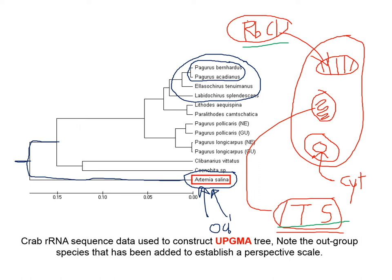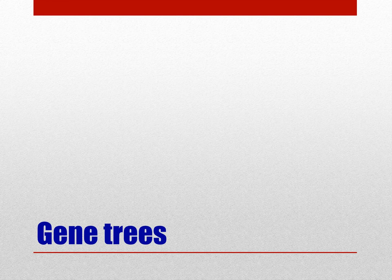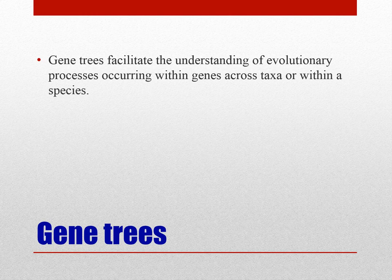The outgroup species are on one branch, and the other species are classified based on their relatedness to each other. Another way to classify species is based on gene trees, in which case we select a gene and look at the evolutionary aspect of that particular gene within a species or between species.